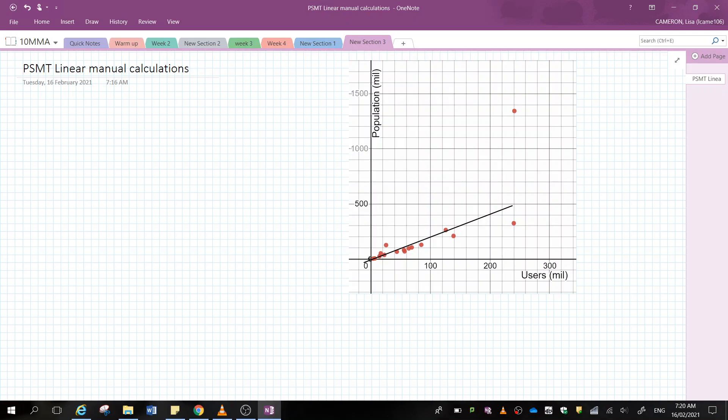Okay, so this point here, I'm going to call that coordinate zero, zero. And then looking over here, I'm going to go for this one because it's on the line, so that's nice. That point is going to be when x is 100, y is roughly 200.